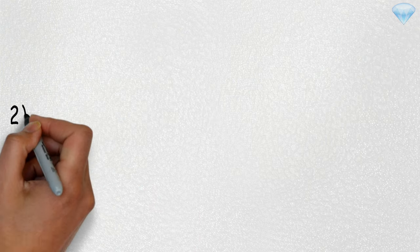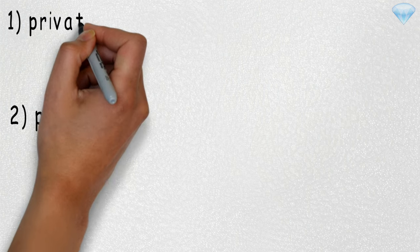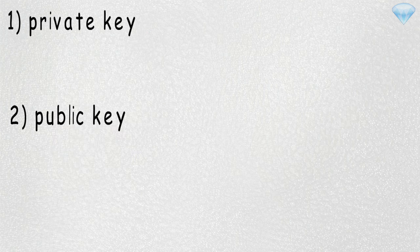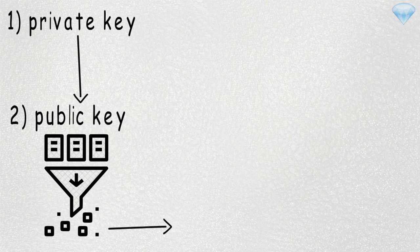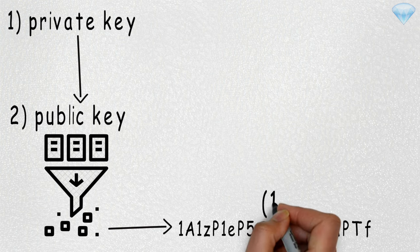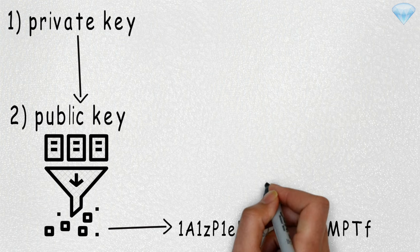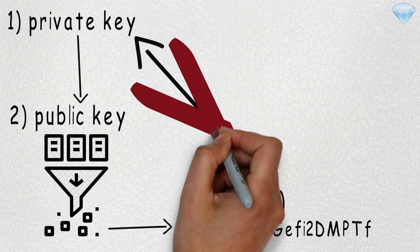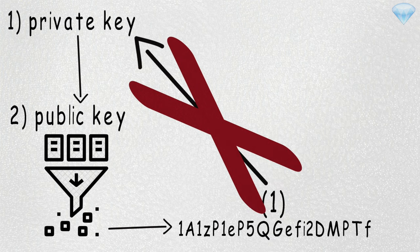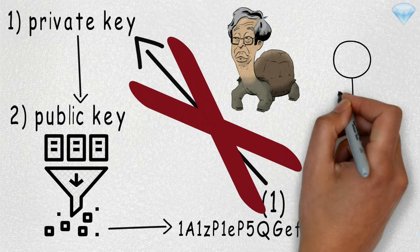When you create a Bitcoin address for yourself, you generate a private key first. From the private key, you compute the corresponding public key, and by hashing that public key, you get your address. Hopefully, you cannot choose the address first and then determine the private key from that — otherwise, you could determine the private key for any address. Wait, what? What is Satoshi's address again?